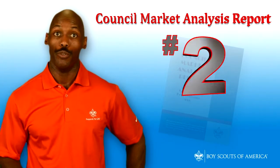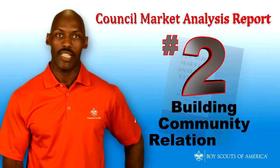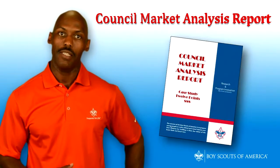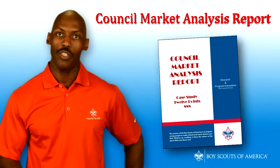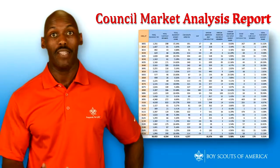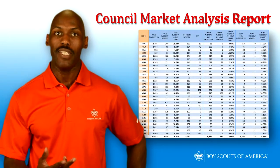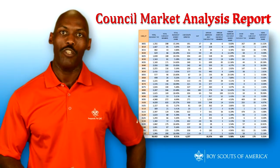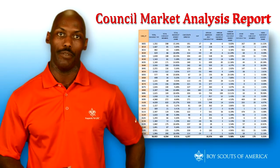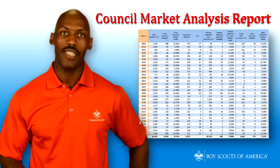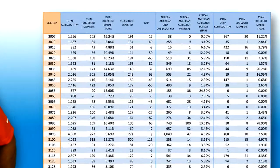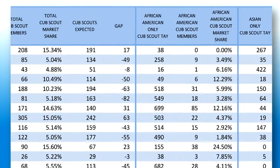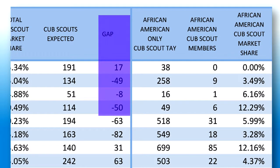Reason number two: building community relationships. A gap analysis of each zip code is on the Cub Scout table in the back of the report. By looking at the council's current Cub Scout membership, the gap shows you the number of youth in each zip code who are more likely to join Scouting. If you have a high negative gap, such as negative 50 in a zip code, you should look for a new chartering organization in that area to start a new unit.